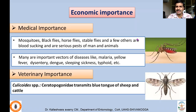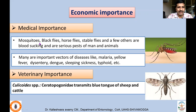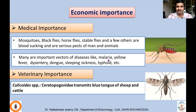Dipterans are a highly diverse group of insects and have adapted to very different types of habitats, coming in contact with humans, domestic animals, and agricultural ecosystems. Medically, mosquitoes, black flies, horse flies, stable flies, and others suck blood and are serious pests of man and animals. Many are important vectors of diseases like malaria, yellow fever, dysentery, dengue, sleeping sickness, and typhoid, acquiring the pathogen from an infected person and transmitting it to a healthy person.